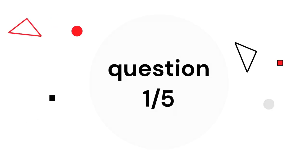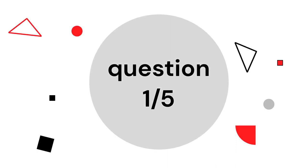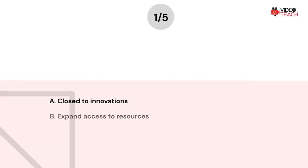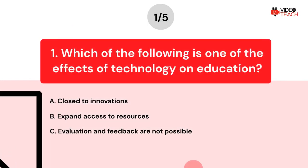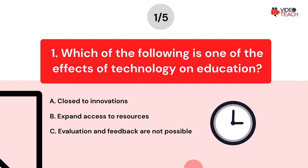Question number one. Which of the following is one of the effects of technology on education? Option A: Close to innovations. Option B: Expand access to resources. Option C: Evaluation and feedback are not possible. Now you have about 15 seconds to think about your answer.